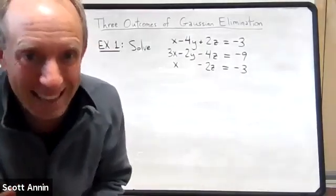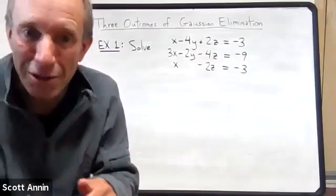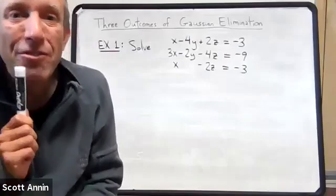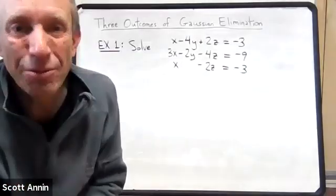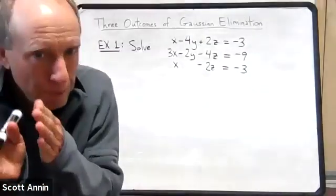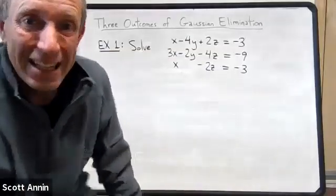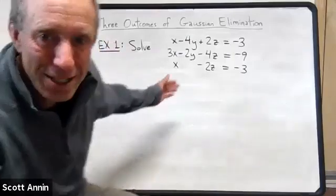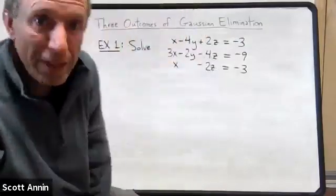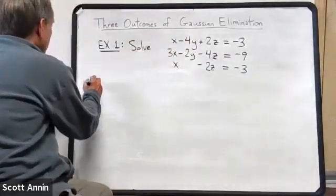And not to spoil all of the fun, it turns out that the most important thing that determines which outcome arises for a particular problem is the positions of the pivots in the row echelon form. This is the key. So let's look at three examples and pay particular attention to what happens with the pivots in the row echelon form. Here's the first one. I have a system of three equations with three unknowns x, y, and z. The first step, as we always would do, is to put this system into an augmented matrix.